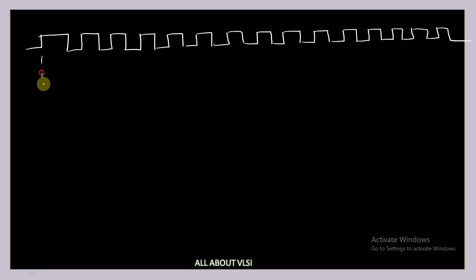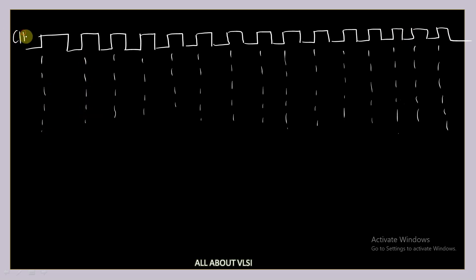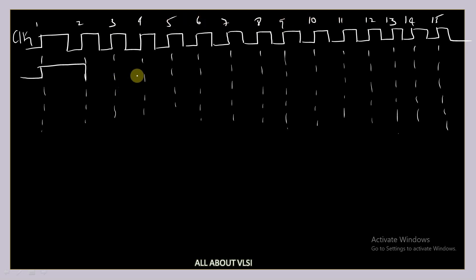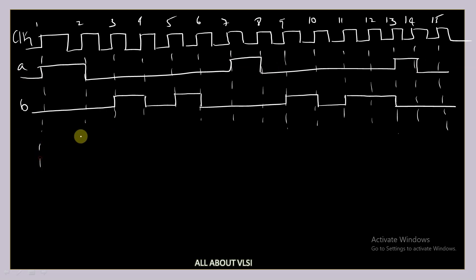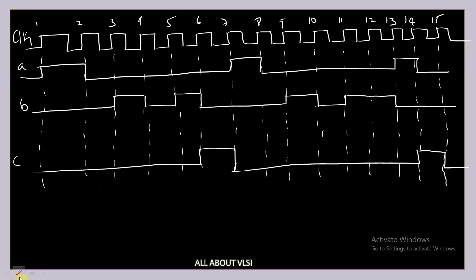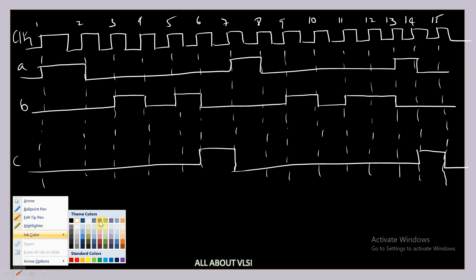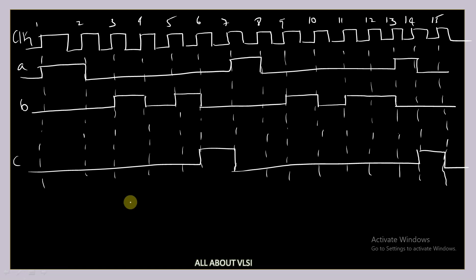Let me draw a clock signal first — these are my positive edges of clock. And let me draw signal A, signal B, and signal C. Signal A is becoming high again at cycle 7. Now let us try to understand where the assertion is getting passed and at which point the assertion is getting failed.